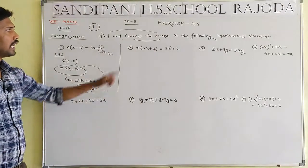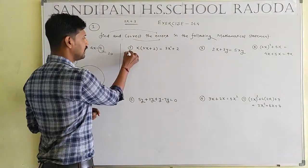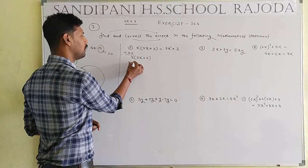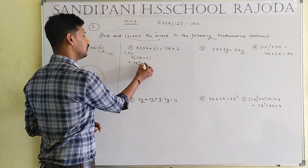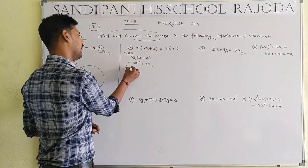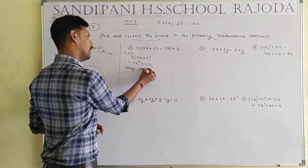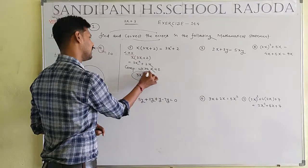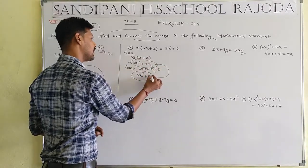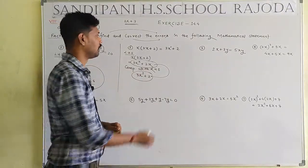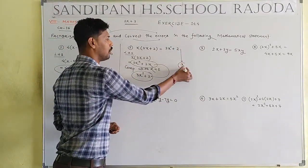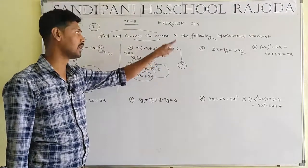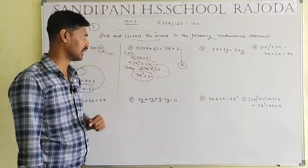Second question: taking LHS as x into (3x plus 2). x into 3x equals 3x square, and x into 2 equals 2x. Comparing with RHS, which is given as 3x square plus 2, we see that x is missing. The error in RHS is that x is needed — it should be 2x, not 2.